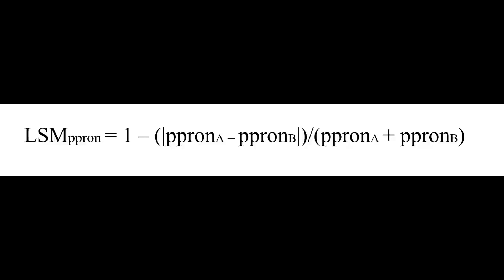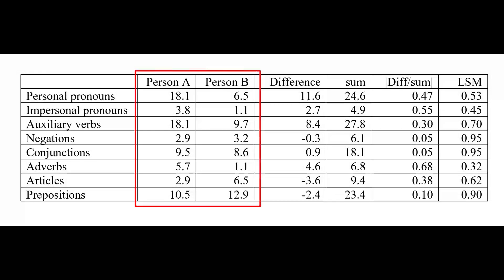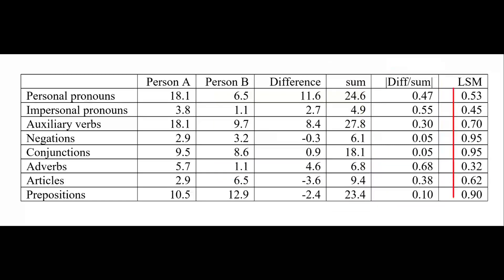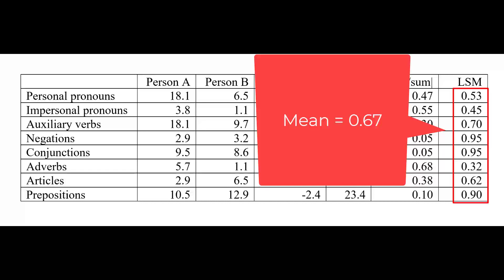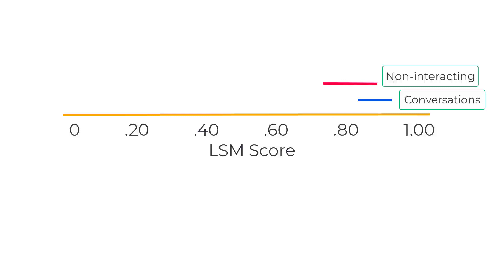But let's make this easier to interpret. By subtracting our calculations from 1.0, we reverse the scale so that a high number now reflects high matching between the two texts. Returning to the table, you can see how LSM works for all eight dimensions of function words. We start with the means of each dimension, then the differences between them, the sum of persons A and B, the absolute value of dividing the difference by the sum, and the last column subtracts that number from 1. Finally, we average each of these component LSM numbers, which results in an overall score of 0.67. Because we divide the difference by the sum, we always end up with a ratio ranging from 0 to 1.0. LSM ranges from 0 (extremely low style matching) to 1.0 (perfect style matching). For most conversations, the numbers generally range from 0.83 to 0.94. When comparing standard texts that are not conversations, the numbers are typically lower, usually between 0.75 and 0.88. A score of 0.67 is quite low.